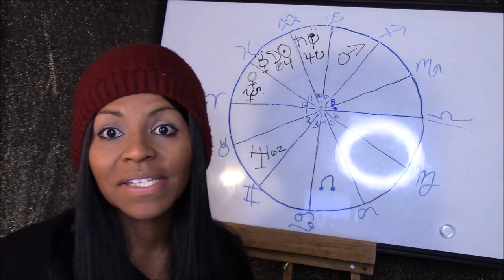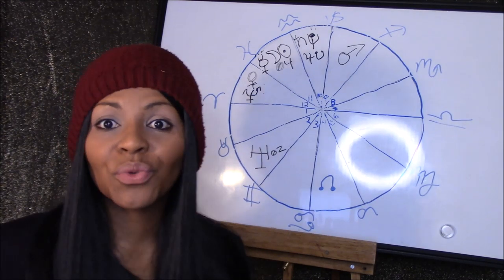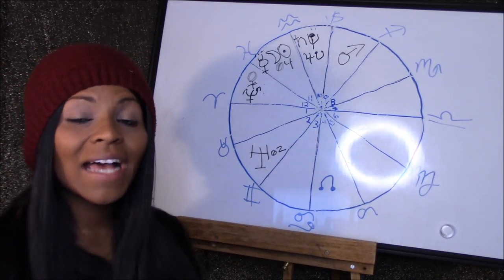First things first, make sure you locate that four degrees of Aquarius on your chart. Now the actual aspect that is happening when we have a New Moon, just in case you're new here or learning astrology...